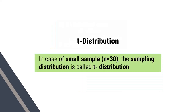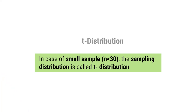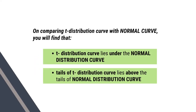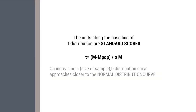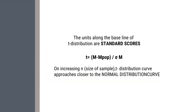Let us consider the T distribution. We have already discussed the concept of sampling distribution. In the case of small samples where n is less than 30, the sampling distribution is called the T distribution. On comparing the T distribution curve with the normal curve, you will find that the T distribution curve always lies under the normal distribution curve, while the tails of the T distribution curve lie above the normal distribution curve. The units along the baseline of the T distribution are standard scores, so T equals m minus the population mean, divided by the standard error of mean.